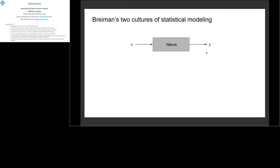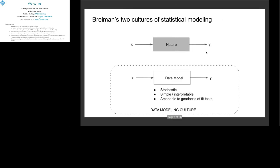We are in a supervised learning setting — given a set of X-Y pairs, and assuming that nature has a process for generating the data. Given some X, there's a process we don't know that gives us the corresponding Y. The two cultures Breiman identified are: first, the data modeling culture, where you assume a probabilistic model connecting X to Y. This approach typically yields models that are simple, interpretable, and validatable through goodness-of-fit tests or residuals — think linear regression or logistic regression, where you have interpretable parameter estimates.